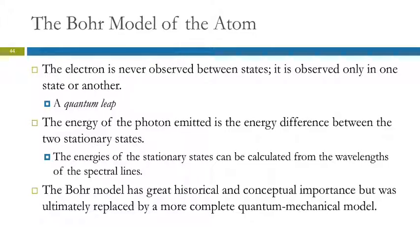The energy of the photon that's given off is equal to the energy difference between those two states. So we can look at the energy of the light emitted, and we can use Rydberg's equation and figure out what the different levels are and what their energies are based on the spectral lines.